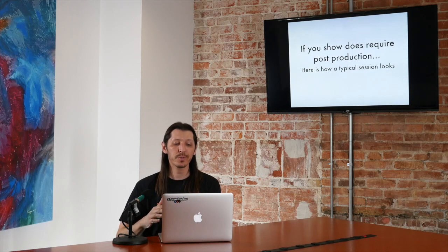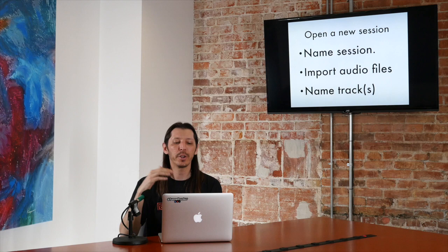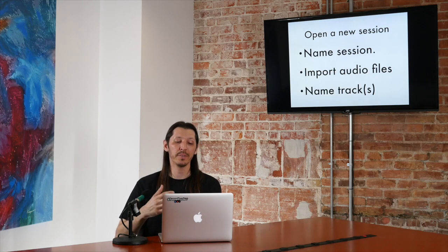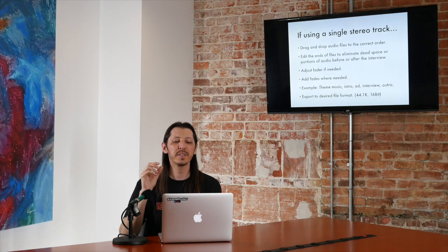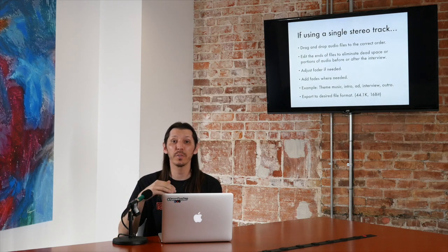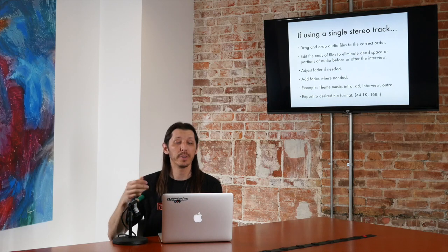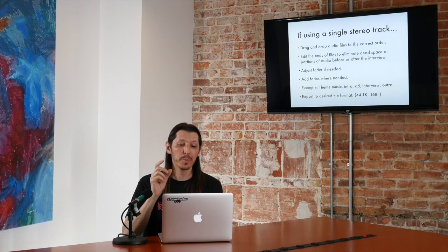If your show does require post-production, here's what a typical session is going to look like. You're going to open a new session, name it — naming is very important when you have a ton of episodes, so you need a naming convention that makes sense. You're going to import all the audio files and name your tracks. If you're using a single stereo track, simply drag and drop the audio files in the correct order. Do whatever volume automation you want, set your levels, add a little EQ if you want — and that's it, you're done. If you have theme music before the interview, drag and drop your theme music first, then grab your interview and slide it over. It's really easy — just drag and drop if you're only using one track.